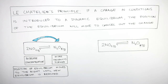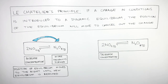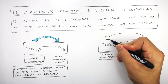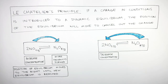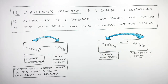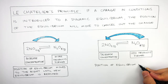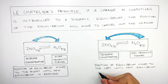Now, if we decrease the concentration of NO₂, this will cause the rate of the backward reaction to increase, so fewer products are formed, causing more reactants to be formed. The position of the equilibrium moves to the left until a new equilibrium is reached.